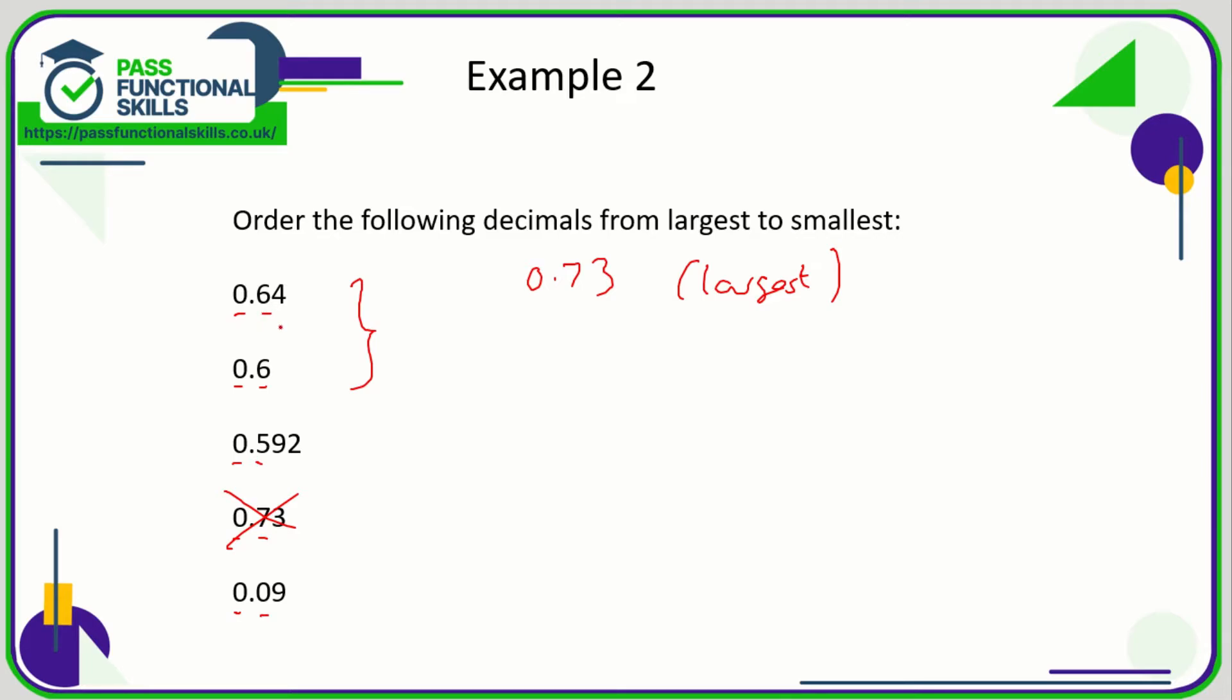If you don't like comparing decimals with different numbers of decimal places, then fill the blanks or the gaps with zeros. So 0.60 and 0.64.